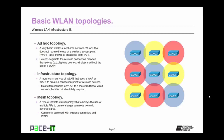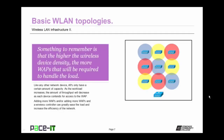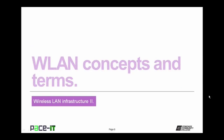Then there's the mesh topology. This is a type of infrastructure topology that employs the use of multiple access points to create larger seamless network coverage areas. They're commonly deployed with wireless controllers and wireless access points. The higher the wireless device density, the more wireless access points that will be required to handle the load. As the workload increases, the amount of throughput will decrease as each device contends for access to that wireless access point. Adding more WAPs and wireless controllers can greatly ease the load and increase the efficiency of the network.